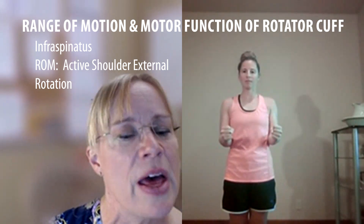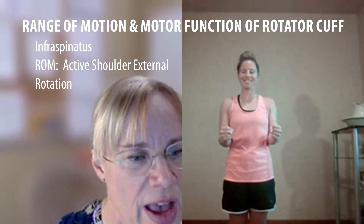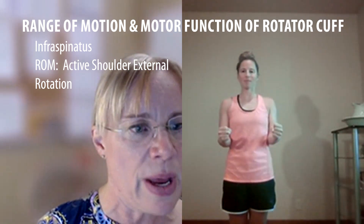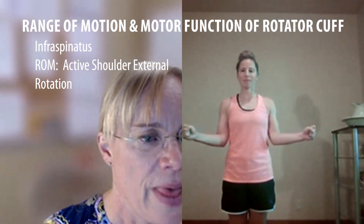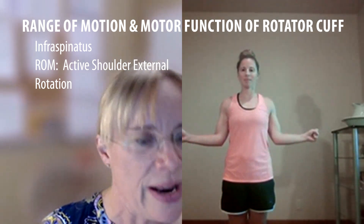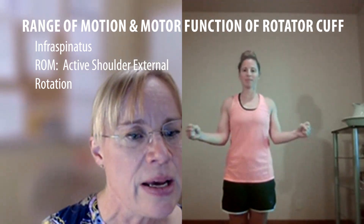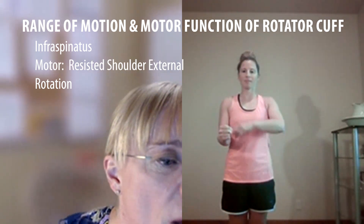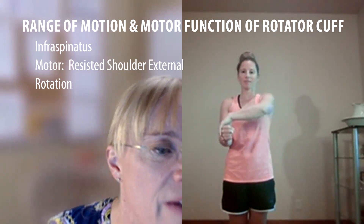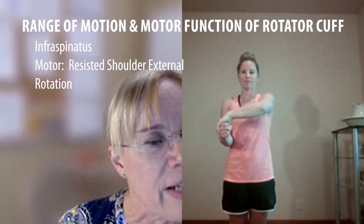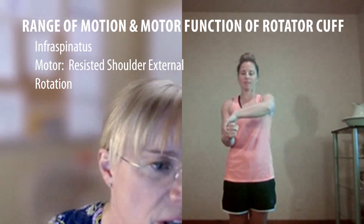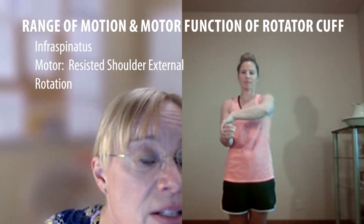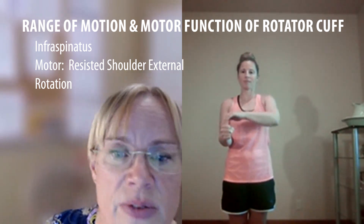Now bring your elbows to your side, hands up like you're riding a horse — arms out, tuck your elbows in, bring your hands out. Good. And now back in. Reach again with your left arm, grab your right wrist, and push your hand out — resist yourself. Good. That's the motor testing for the infraspinatus.